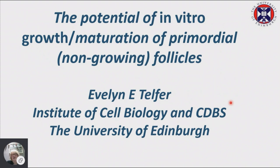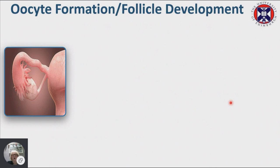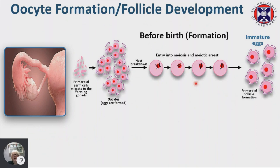I'm going to speak about in vitro growth of the most immature stage of follicle. Just to recap how eggs are formed within the human ovary: we have the formation of the ovary before birth. During fetal life, the primordial germ cells are migrating to the gonadal ridge, forming in clusters, then becoming oocytes when they enter meiosis. They get to prophase one, the diplotene stage, then they're arrested, forming associations with somatic cells — the granulosa cells — to form the store of primordial follicles.